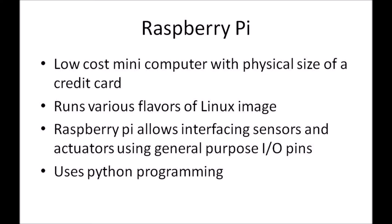Since we have decided to consider Raspberry Pi, knowing its details is essential. There are four quick points about Raspberry Pi. It is a low-cost mini computer with the size of a credit card. It runs on various flavors of Linux, such as Raspbian OS and Noobs, which makes it handy without needing to learn an extra OS. The whole idea is to connect sensors and actuators to make IoT work, so it helps in interfacing sensors and actuators through its General Purpose I/O pins. The language used to program the Raspberry Pi is Python.